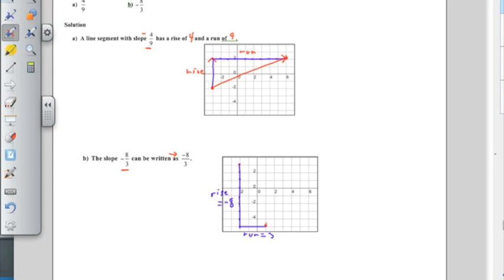And it has a run of three. And so to finish it off, I'm going to just take my start point and connect it with a straight line to my end point. And that is a line that has a slope of negative eight thirds. So what you just want to be careful of is watch the numbers and make sure that your start point leaves you enough room to get your end point in.